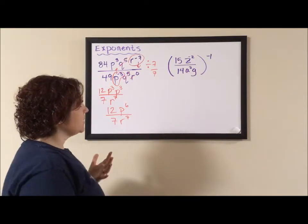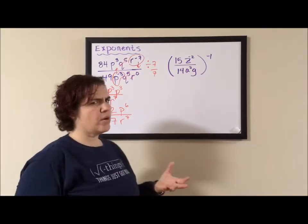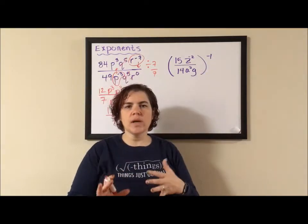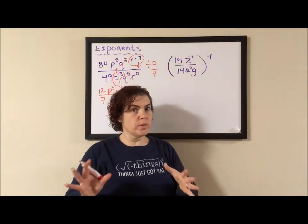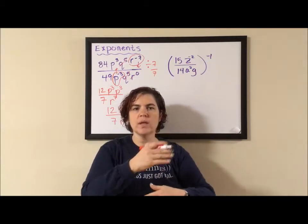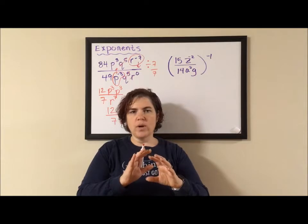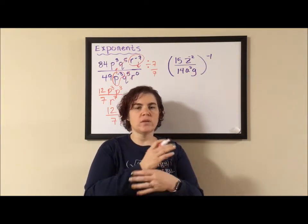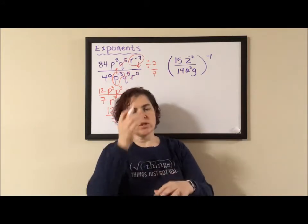For my second example, it's a little simpler and a little harder. I know that sounds counterintuitive. Having a negative attached to parentheses sometimes gets students weirded out, but that negative just means reciprocal. So that negative 1 means when I'm done simplifying my fraction, I should flip it. So the numerator is in the denominator, denominator is in the numerator.